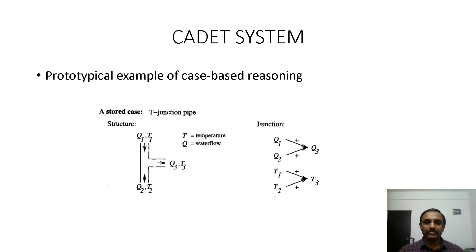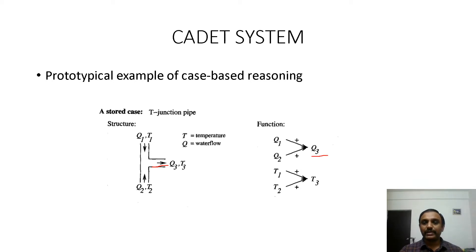We will now take an example to discuss case-based reasoning using a case design tool system. This example involves a mechanical T-junction pipe used in plumbing, where water comes in from two directions and exits in one direction. Here Q is the water flow and T is the temperature. Q1 and Q2 combine to give Q3, and temperatures T1 and T2 combine to give T3.